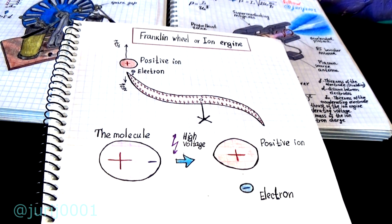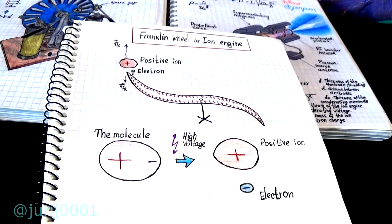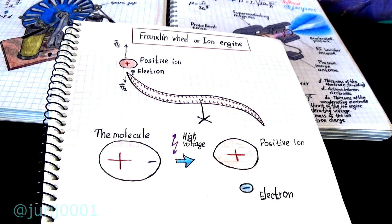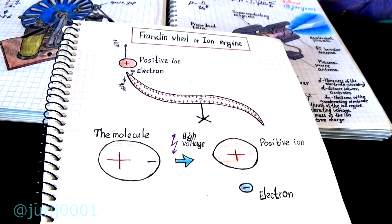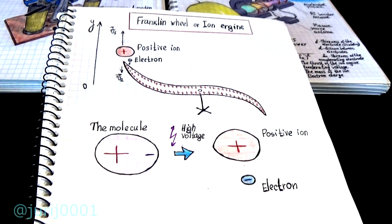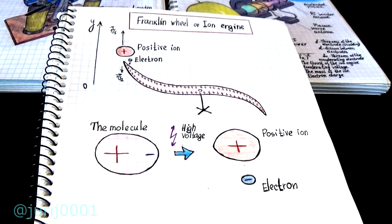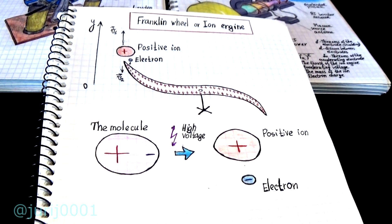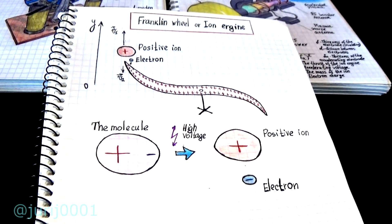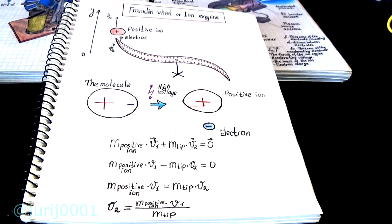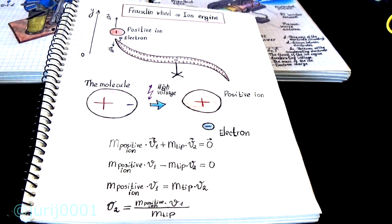Positive ions repelling from the tip cause the tip to move according to the law of conservation of momentum. I will write the law of conservation of momentum for this case, taking into account the fact that at the initial moment of time the wheel was at rest. I wrote how you can find the value of the linear speed of rotation of the tip.